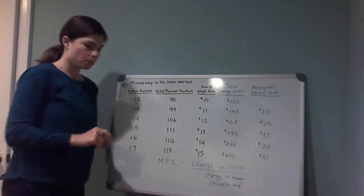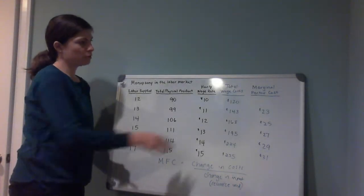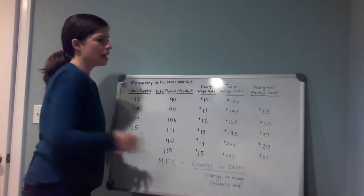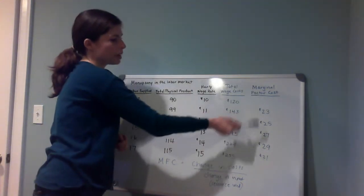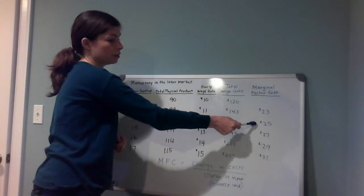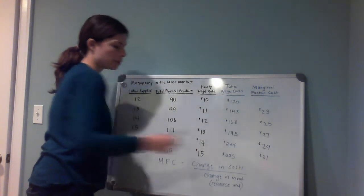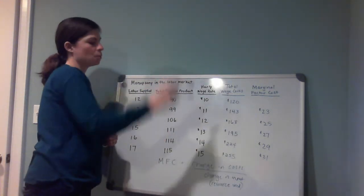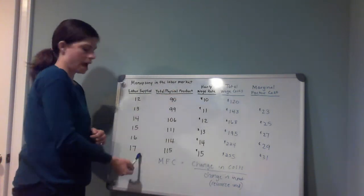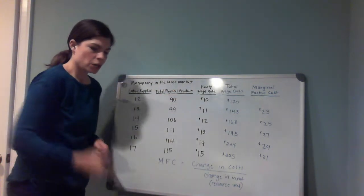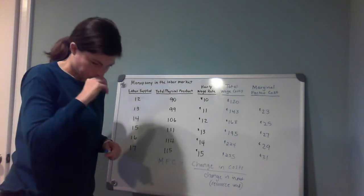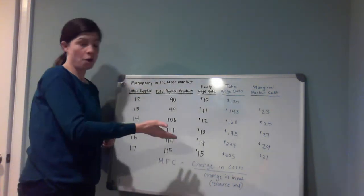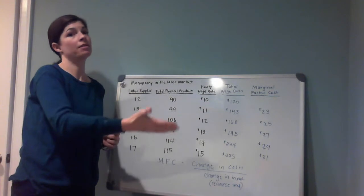We've answered those two questions — total wages filled in, increasing more and more each time, and the marginal factor cost showing by how much: we increased by $23, then $25, going up each time. As you can see, it gets exceptionally more expensive as you add more workers.